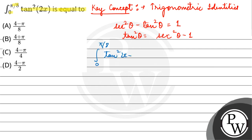tan square 2x minus 1 dx. That would be equal to... how can you write it?